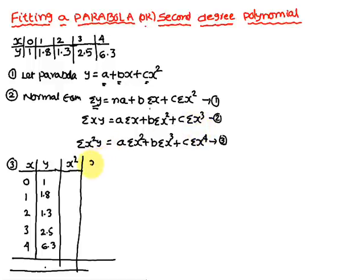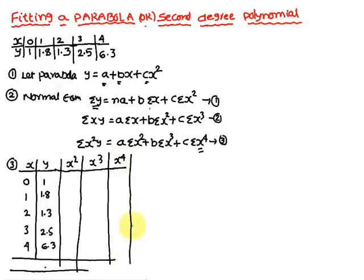We also frame the x⁴ column, since x⁴ values are required. Next, we frame the xy column and the x²y column, as these are needed for the second and third normal equations.